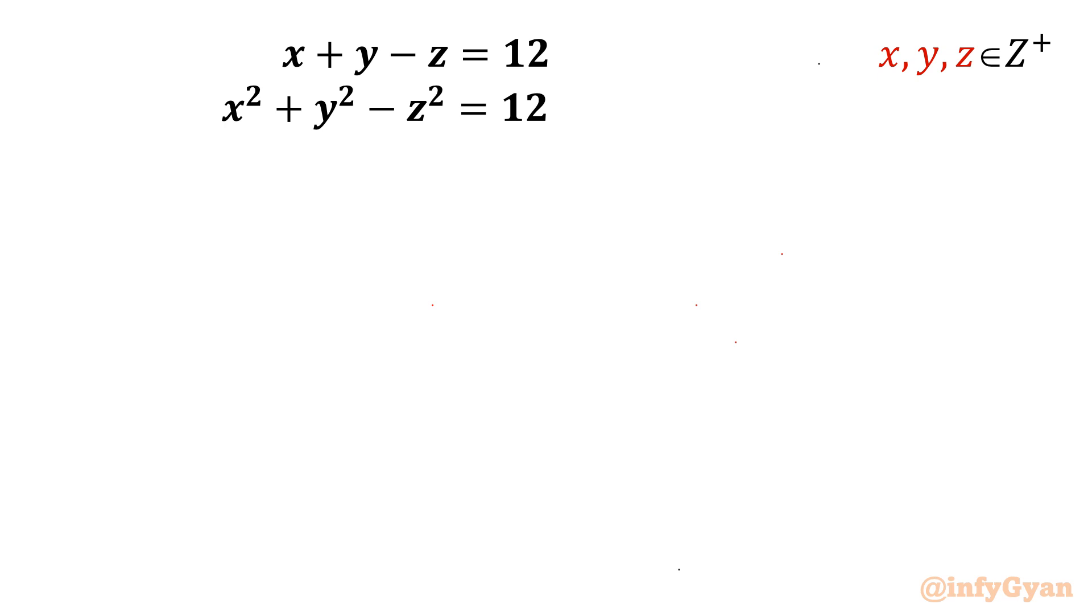Welcome back to Infigyan friends. Today in this video we are going to take up another interesting and challenging diophantine equation. It is from British Mathematical Olympiad. The equations are x plus y minus z equals 12 and x squared plus y squared minus z squared equals 12. There are two equations, three variables.